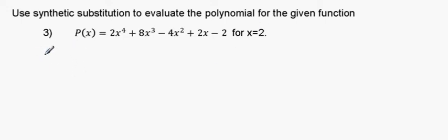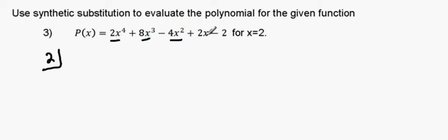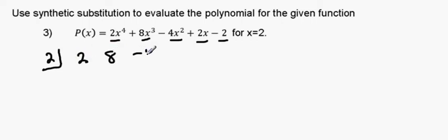We're going to put 2 into the box. Now we look at our polynomial. We have x to the 4th, x cubed, x squared, x to the 1st, and a constant. We don't have any missing terms we have to fill in, so we put the coefficients down: 2, 8, negative 4, 2, negative 2.